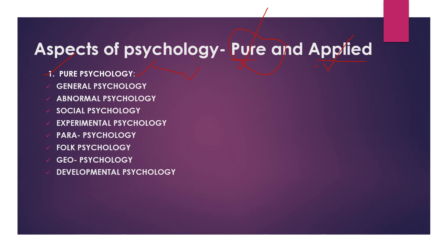The application of these theories, principles, and rules to any field is nothing but applied psychology. Pure psychology is a theoretical study — standard rules, principles, and theories. When this theoretical study is applied to any field, that is applied psychology. For example, pure psychology is the theory part, and applying it to medicine, engineering, geography, social behavior — that is applied psychology. Social psychology is also one such area.